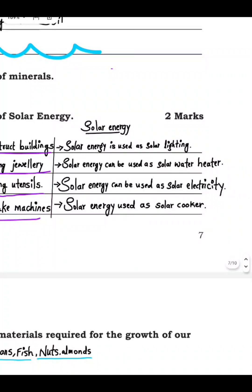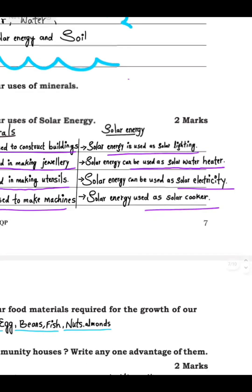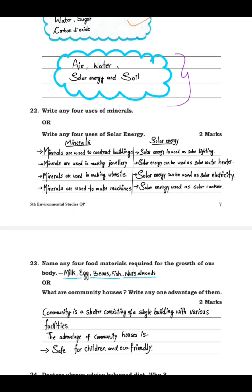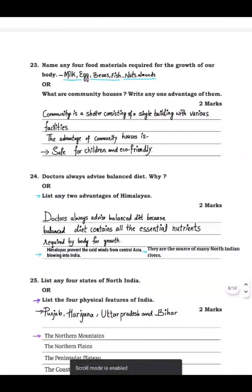For solar energy uses: solar energy is used for solar lighting, solar energy can be used as a solar water heater using solar panels, solar energy can be used to generate solar electricity, and solar energy is used in a solar cooker to cook food. Those are the uses of minerals and solar energy.